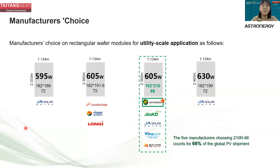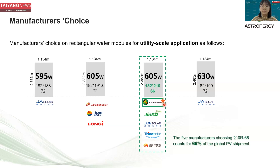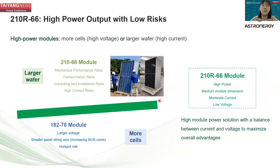This slide shows the manufacturers' choices for utility scale. There are five manufacturers choosing the 210 rectangular 66 modules, and Astro Energy is also on the side of 210 rectangular. These five manufacturers account for 66% of global PV shipment. The reason we chose 210 rectangular 66 is because it provides high power output with low risks compared to other large-format modules.